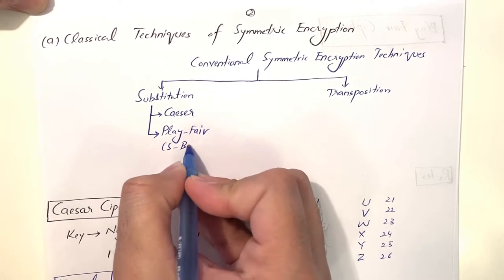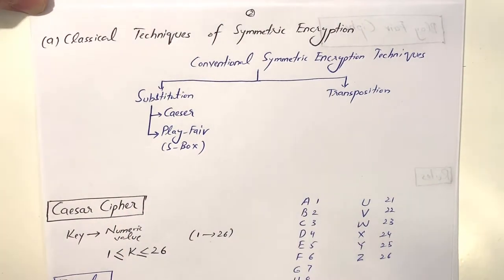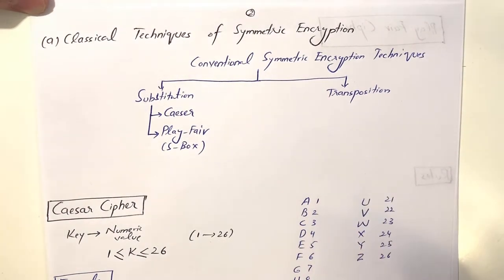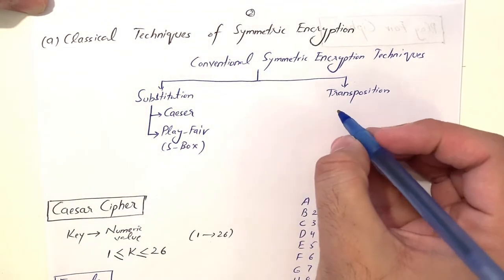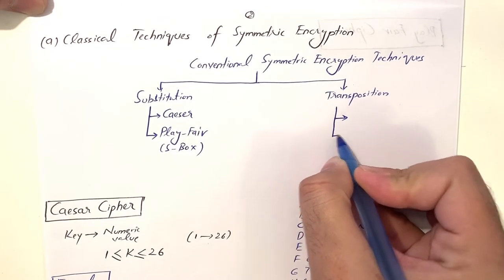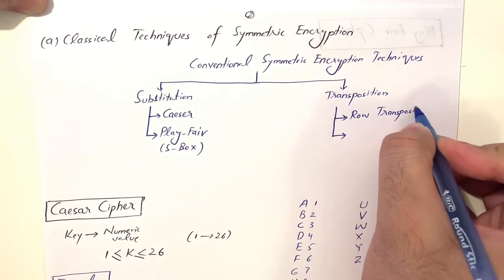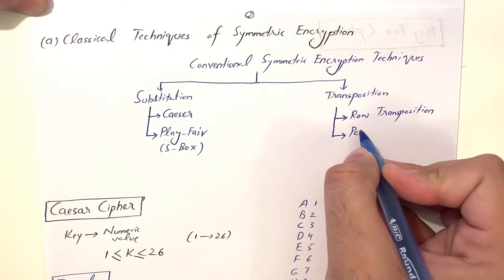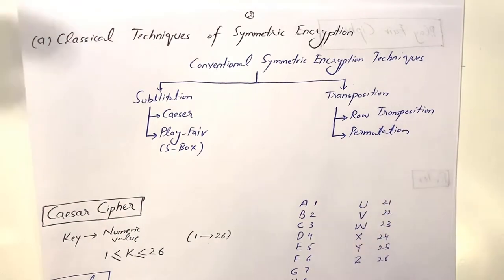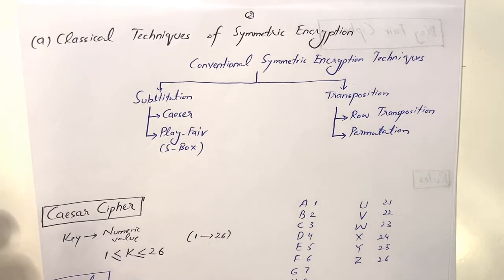We will discuss two substitution cipher techniques: Caesar cipher and the Playfair cipher (also called the S-box or substitution box). These two methods are very important because we use them in DES and AES. For transposition, we will discuss two types: row transposition and permutation scheme. Other transposition schemes like rail fence cipher exist, but the main idea is the same — jumble up the data.